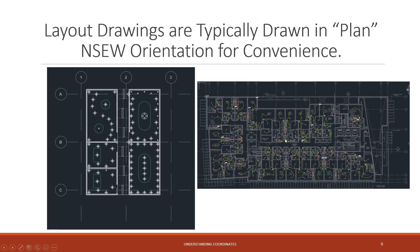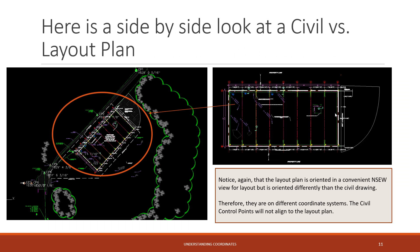They'd be oriented slightly differently to represent exactly where true north, east, south, or west would be. Taking another look: you have the civil plan representing the true map north, south, east, and west view of the site. Then typically the layout plan is brought over in a plan north, south, east, west view, and therefore is on a different coordinate system.